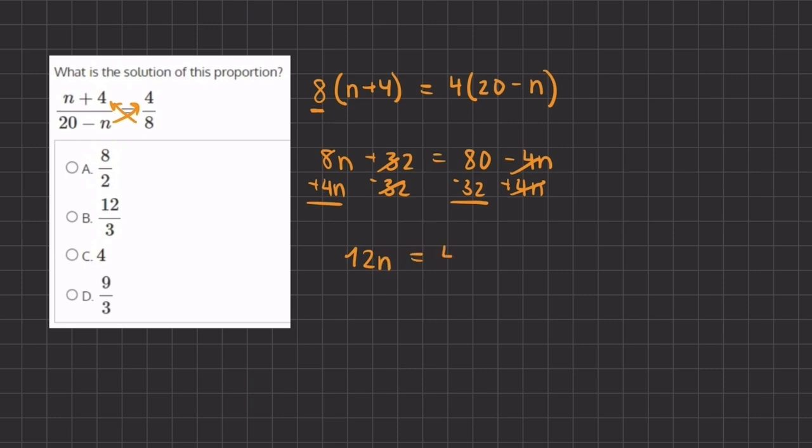Now in order to isolate this n we're going to divide 12 on both sides and now we have n equals 48 divided by 12 which is exactly 4. So the value of n is 4 which corresponds exactly with answer C.